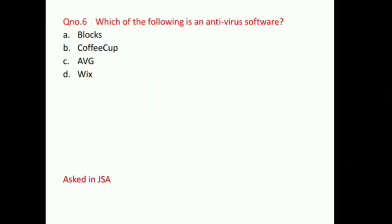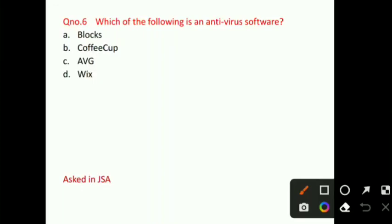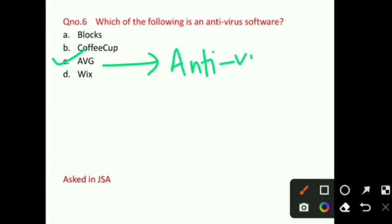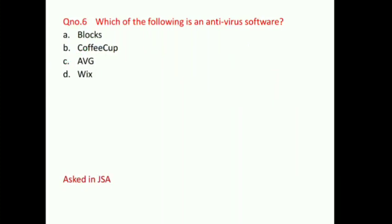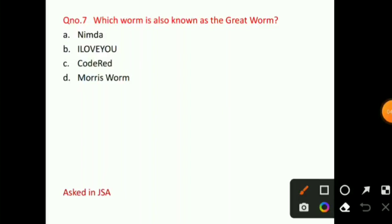Question number 6: Which of the following is an antivirus software? The right answer for question number 6 will be option C, that is AVG. The right answer for question number 7 will be option D, that is Morse worm. This question has also been asked in the JSA.